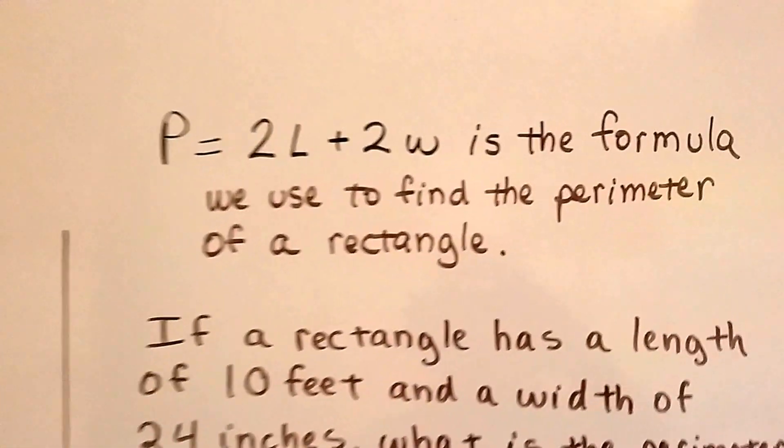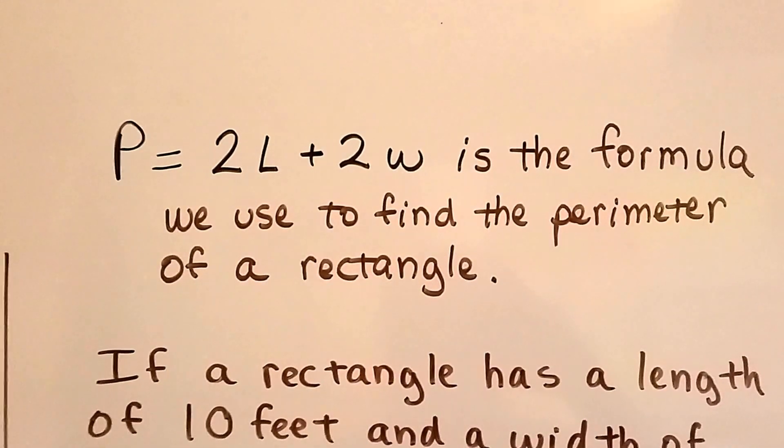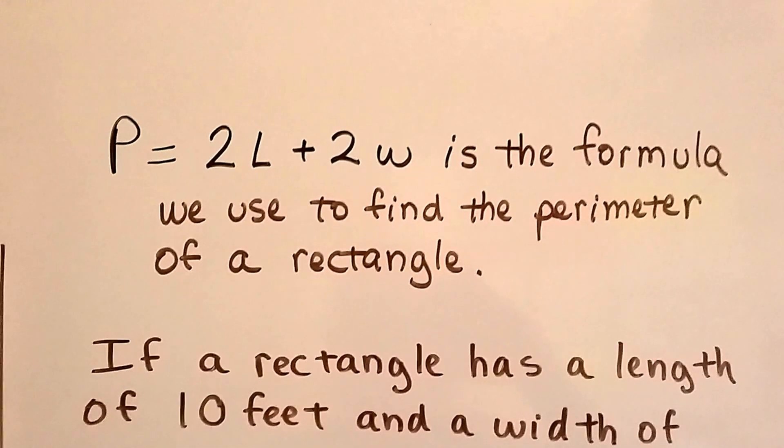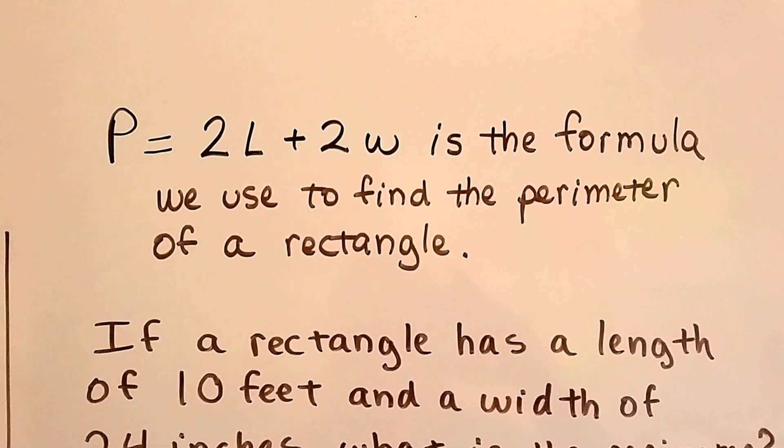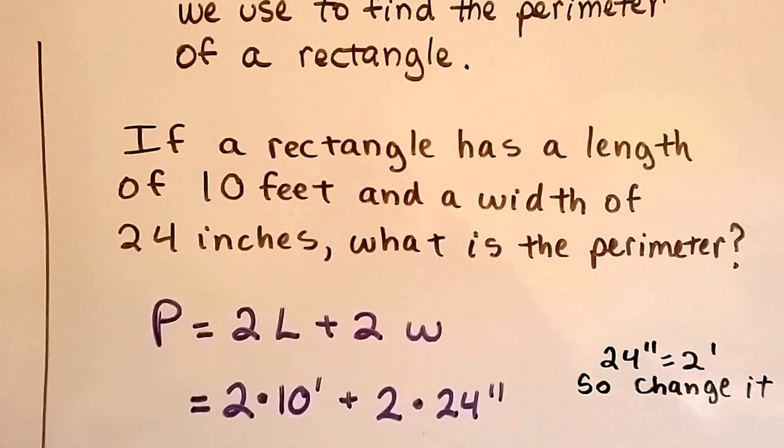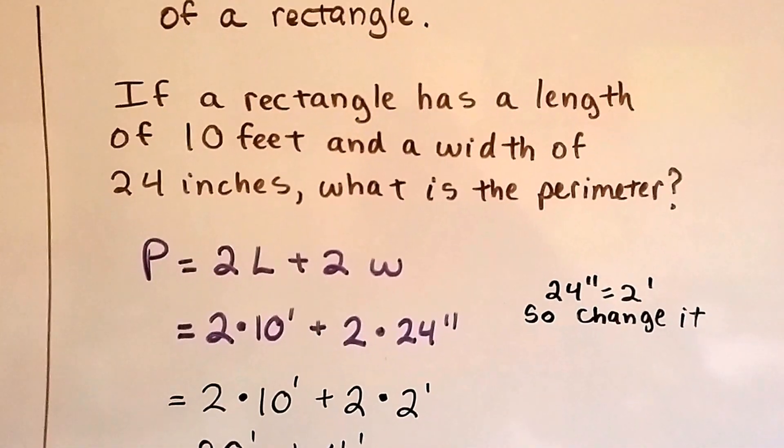So let's take a look at this. We've got p equals 2l plus 2w. That's the formula we use to find the perimeter of a rectangle. The perimeter is equal to 2 times the length plus 2 times the width. If a rectangle has a length of 10 feet and a width of 24 inches, what's the perimeter?